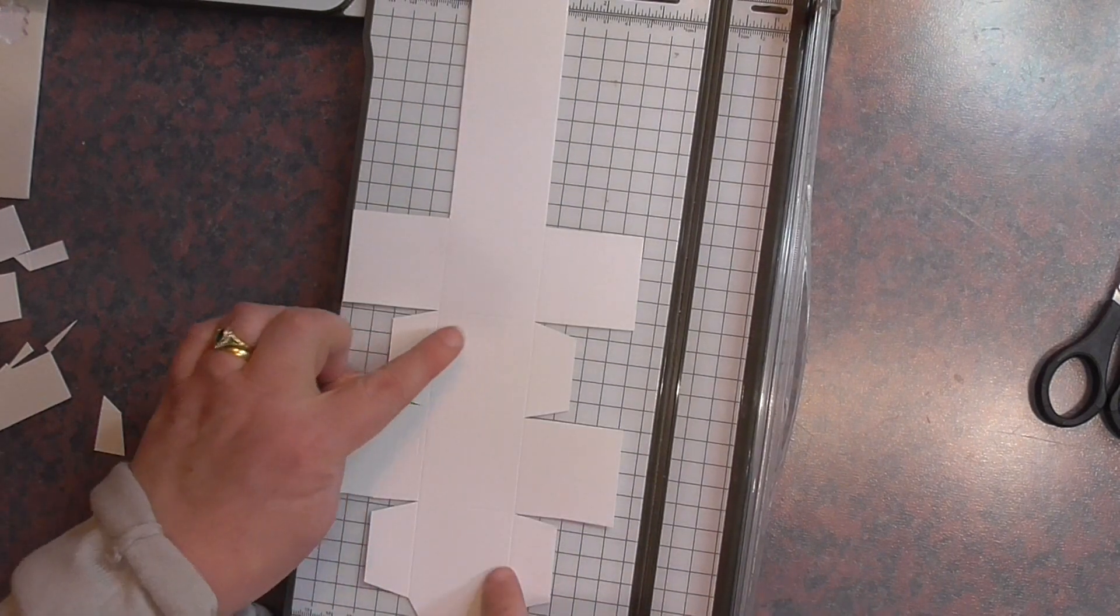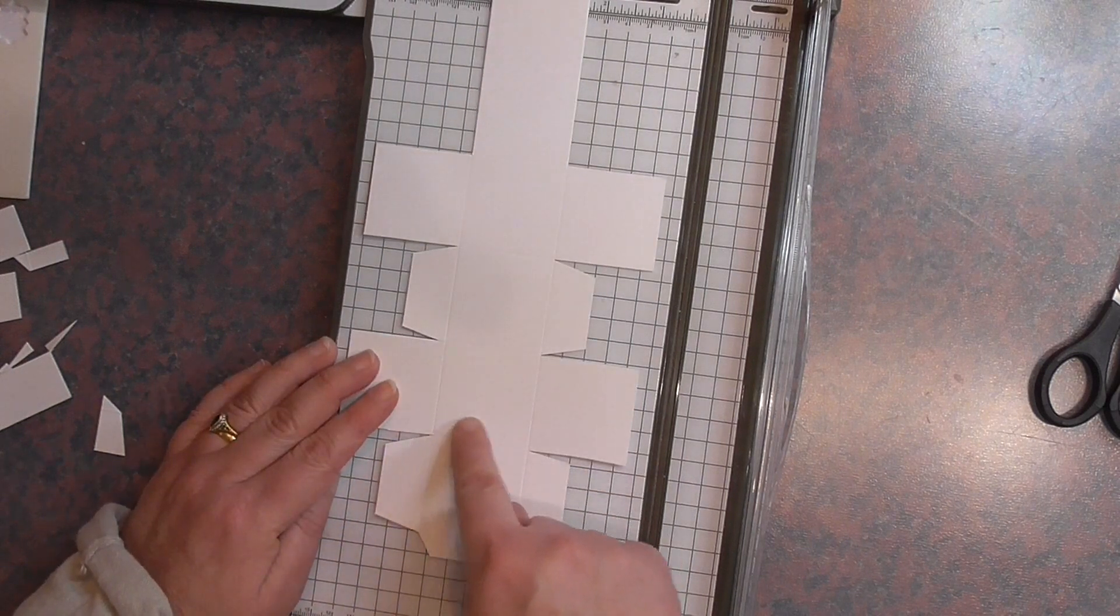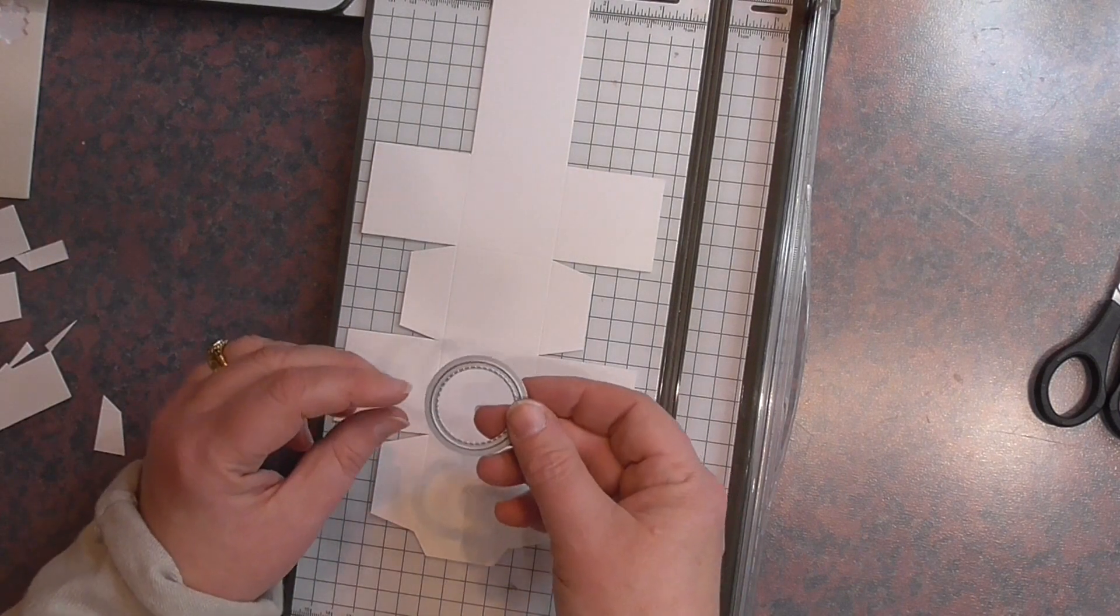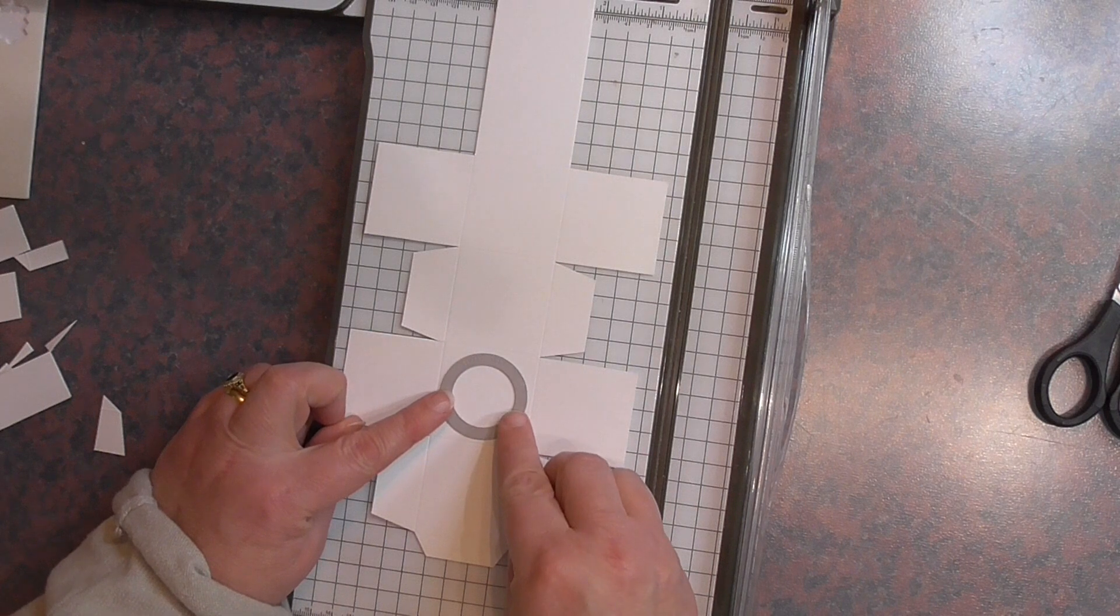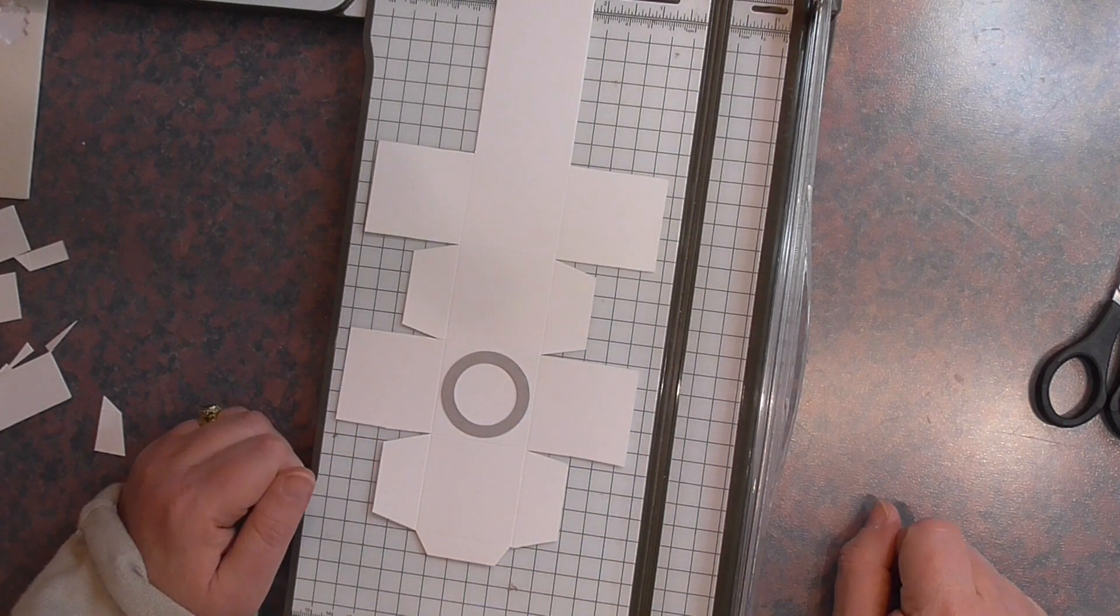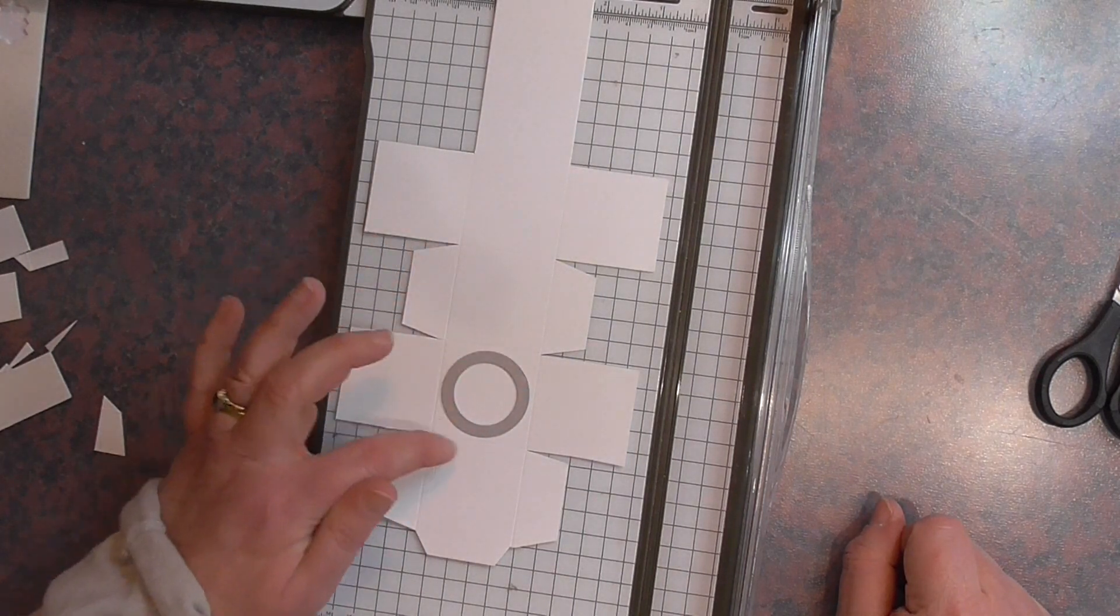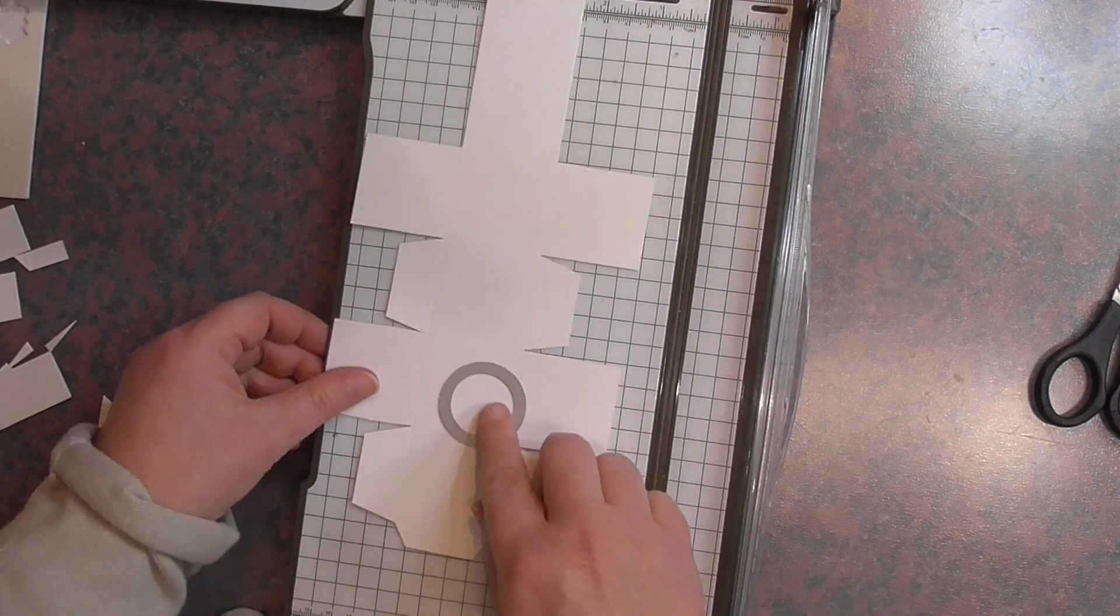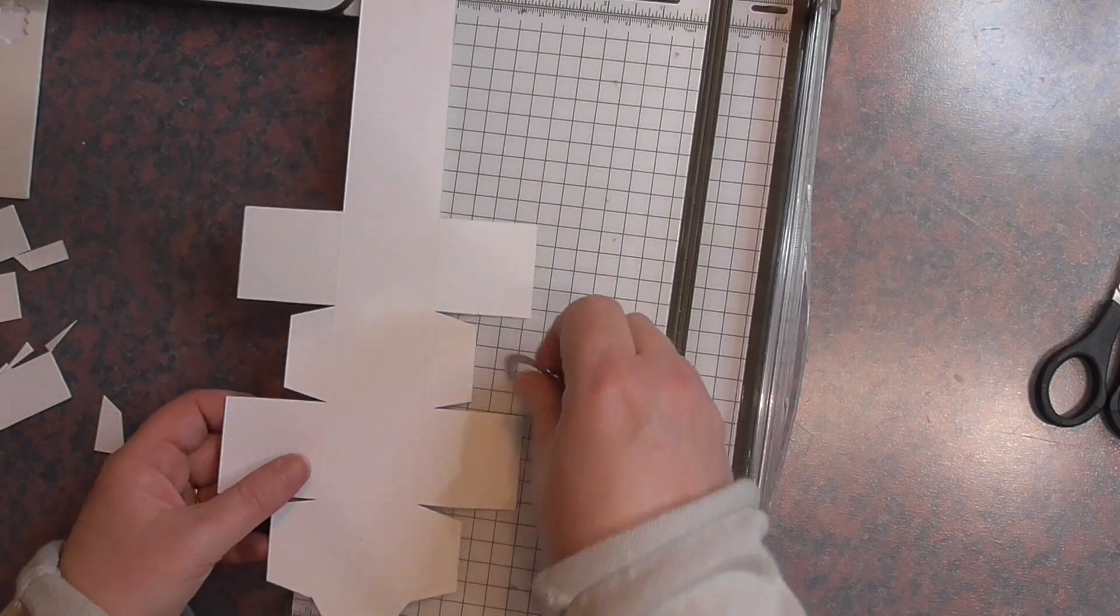Now the next thing is to pop in the window, which comes in this second square here. And I used the stitch framelits that Stampin' Up do, the smallest circle. It just fits in there nicely. But if you don't have either the stitch framelits or another circle die, you can use your trimmer and cut a window out of it and just cut a square. So I cut that and then on the back of it added a piece of vellum to cover the window.